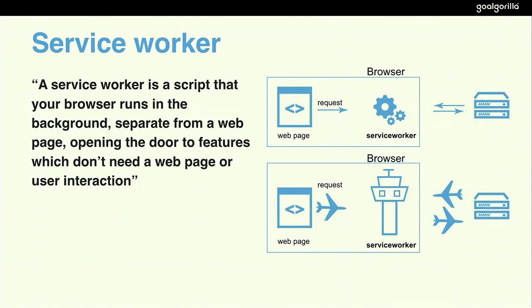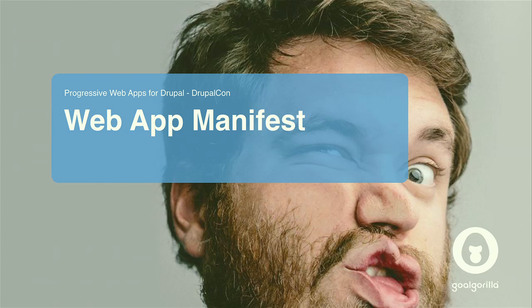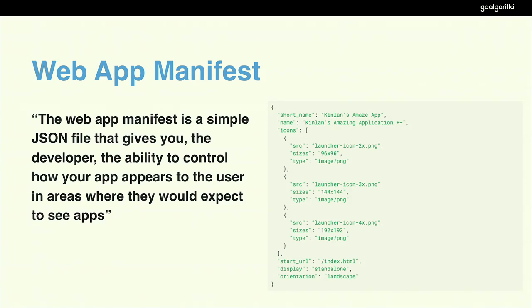It's basically just a script that runs in the background, but it's so powerful — it enables you to create rich offline experiences, things like periodic background syncs and push notifications. That's really the foundation of your Progressive Web App. Next to that, the web app manifest is just a simple JSON file that enables you as a developer to give it that 'appy' feeling. You have the app on your home screen, and the JSON manifest file will make sure it looks and behaves the way you want — portrait mode or landscape mode, which page it opens on. It's all configurable through the web app manifest.